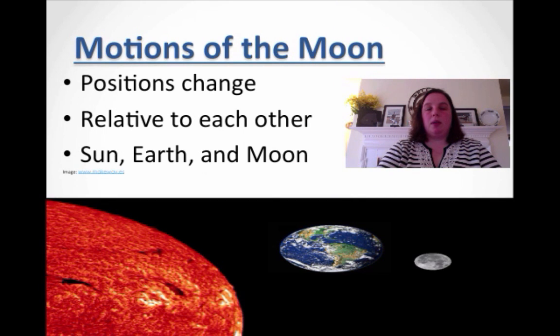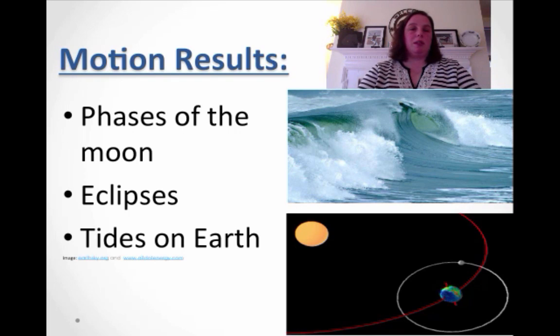So let's talk about motions of the moon. Well, the positions of the moon change, right, relative to each other. So the sun, earth, and moon are all in motion. So what are the results of these positions? So as you change the sun, earth, and moon, what are you going to get?